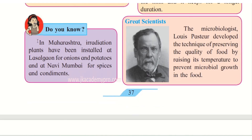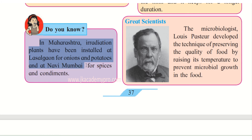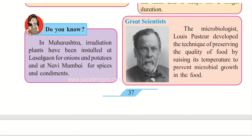Did you know that in Maharashtra, irradiation plants have been installed at Lasalgaon for onions and potatoes, and at Navi Mumbai for spices and condiments? Plants here refer to big units or machines. Lasalgaon is a very big market for onions and potatoes. Spices and condiments include items like cloves (lawang), cardamom (elaichi), and pepper. There are these plants installed at these two places in Maharashtra for irradiating these food items.